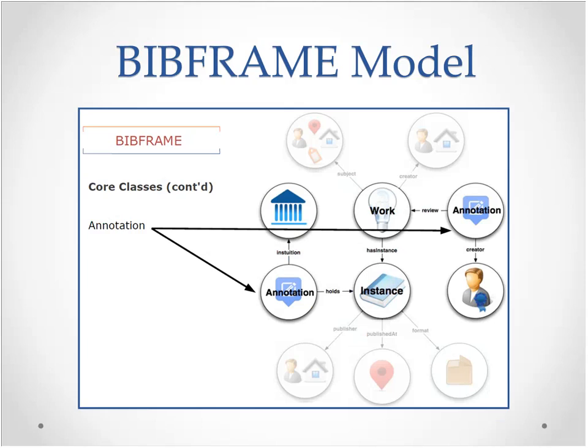Generally, the Work entity in the BibFrame model is equivalent to both the FRBR work and expression levels, and the Instance appears to be equivalent to FRBR's manifestation level. The FRBR item appears to be attached to the BibFrame Instance entity in the form of an annotation for individual holdings. Rather than being a strict interpretation of FRBR, BibFrame is more inspired by FRBR — and for serials catalogers, it's probably a good thing, since the classic FRBR model really never worked perfectly for serial publications.